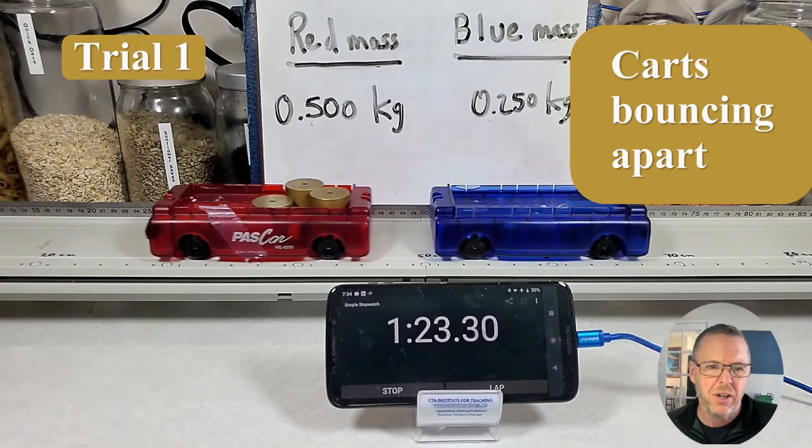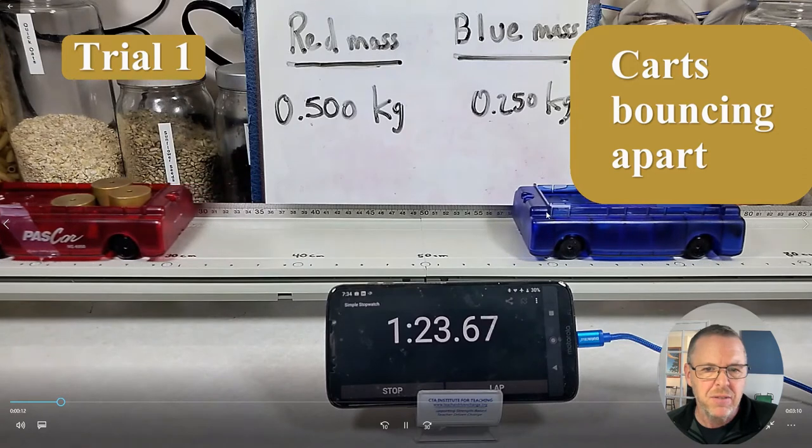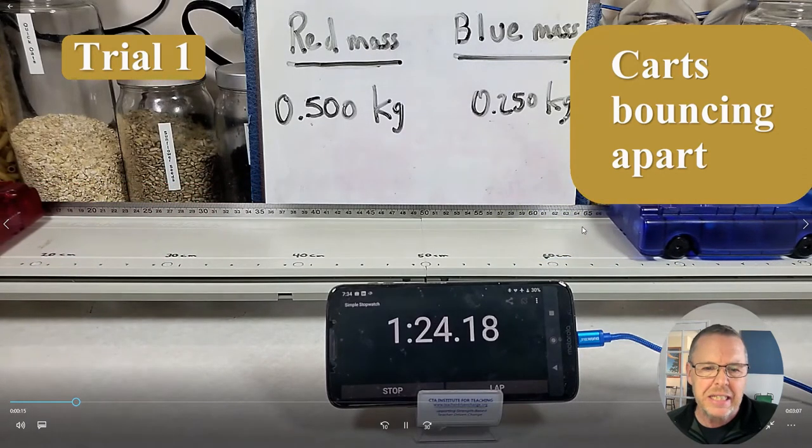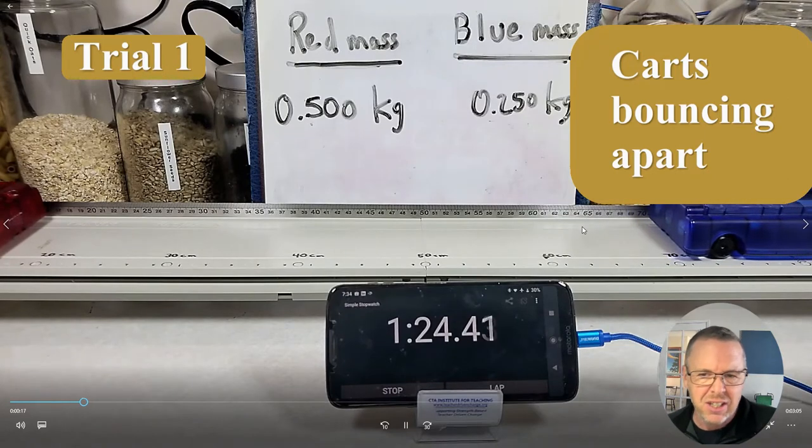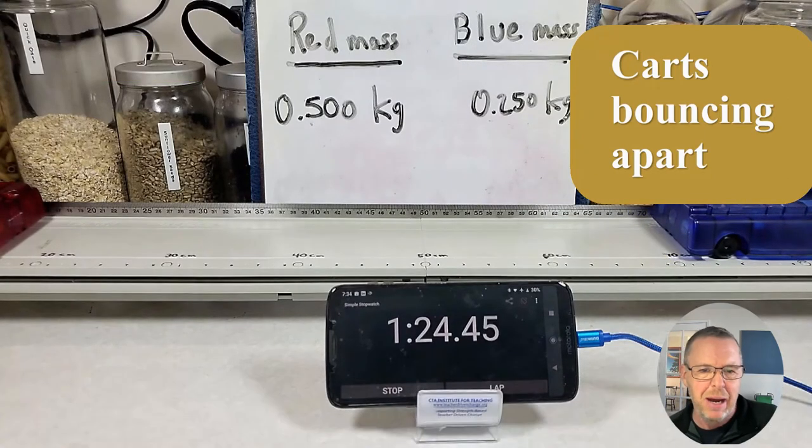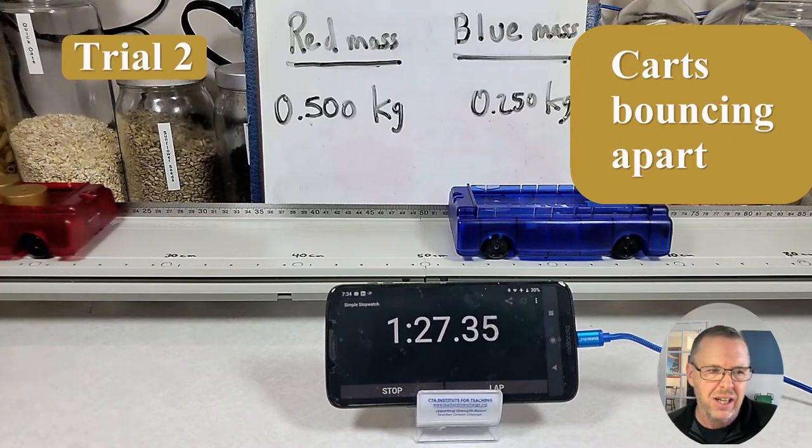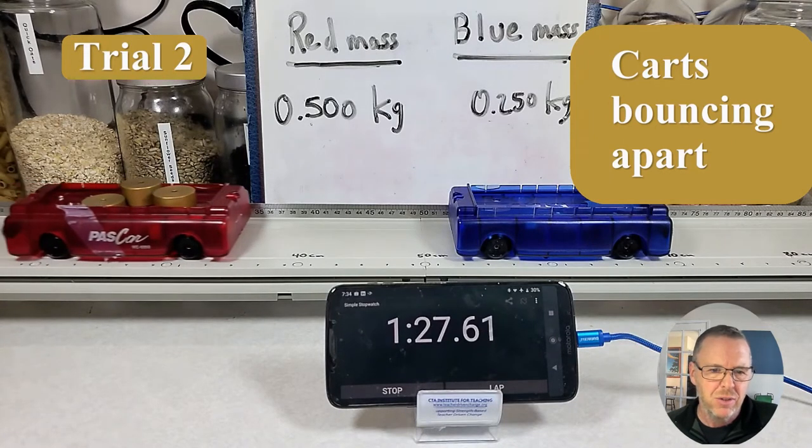Here's an example of the cars bouncing off each other. Now in the tips of each of these carts at the end of the carts there are magnets so they don't actually touch each other they just get really close and then they bounce off so we don't lose energy due to sound or anything else as they bounce into each other.